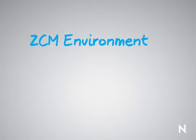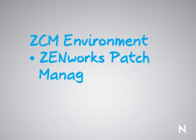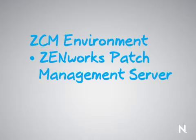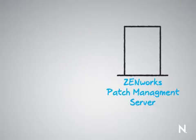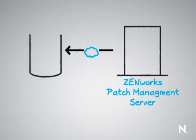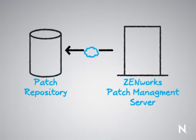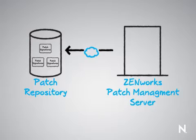In a ZCM environment, you basically implement one of the servers as a Zenworks patch management server. The job of this patch management server is really two things. The first is that each night, the Zenworks server talks to the patch repository — a series of servers out on the Internet that we populate with what we call signatures. Those signatures are what allow us to determine whether a particular patch is applicable to a device, and whether it's been properly installed on the device.